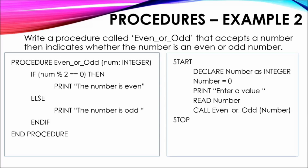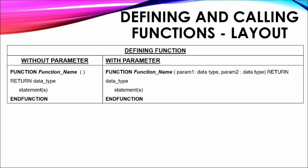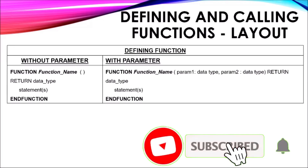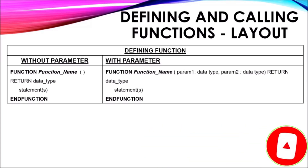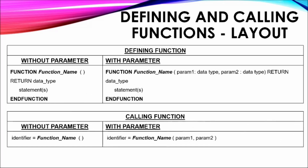Defining and calling functions: The main difference between defining a procedure versus a function includes the change in the specified module type, the keyword RETURN followed by the data type of the item being returned, and the identifier or variable used to hold the value being returned by the function. It is important to note that the variable used to hold the returned value in the function call needs to have the same data type as the return data type in the function definition.